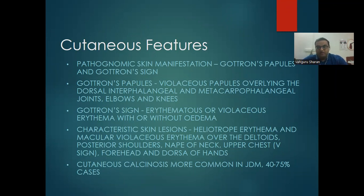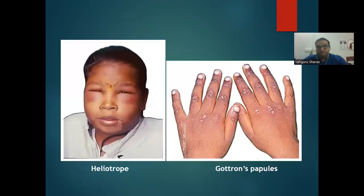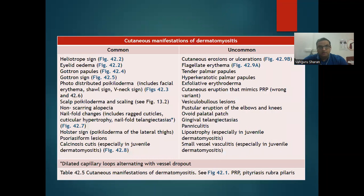Calcinosis is more common in juvenile dermatomyositis, seen in 40–75% of cases. Classical heliotrope rash around the eyes — you can see swelling and violaceous macular erythema. Common cutaneous manifestations include heliotrope sign, erythema, Gottron's papules, Gottron's sign, photodistributed poikiloderma (facial erythema, shawl sign, V-sign), scalp poikiloderma and scaling, non-scarring alopecia, ragged cuticles, cuticular hypertrophy, nail-fold telangiectasias, holster sign (poikiloderma of lateral thighs), and calcinosis cutis mainly in juvenile variant.